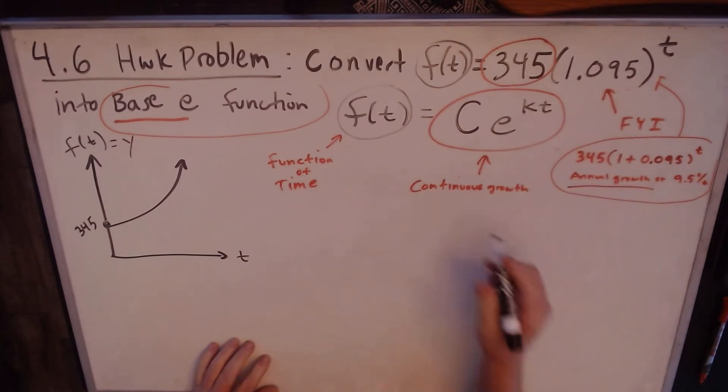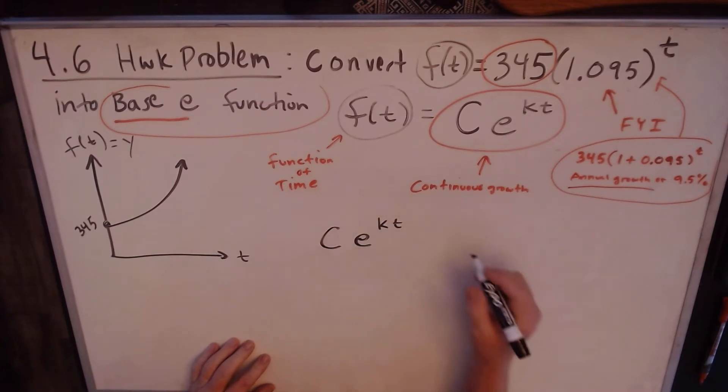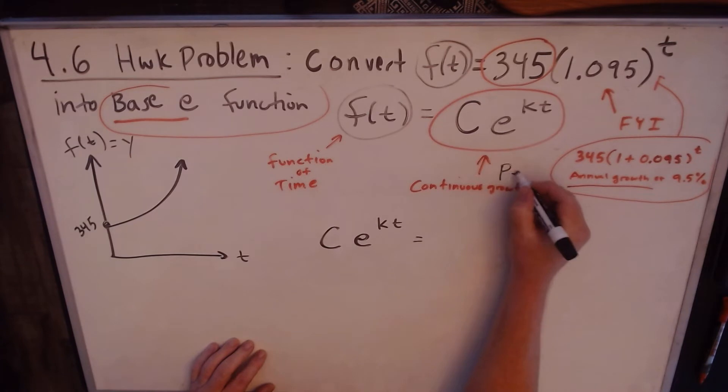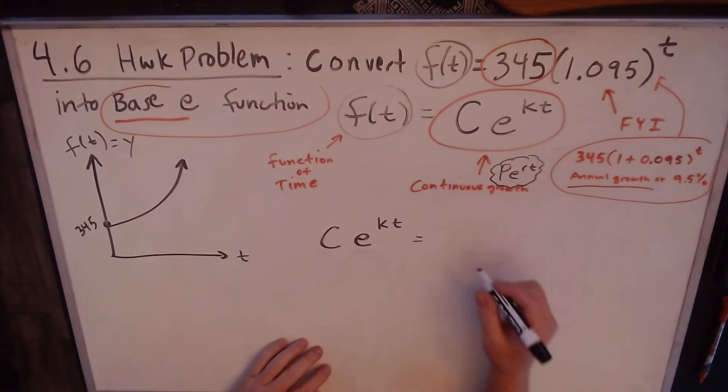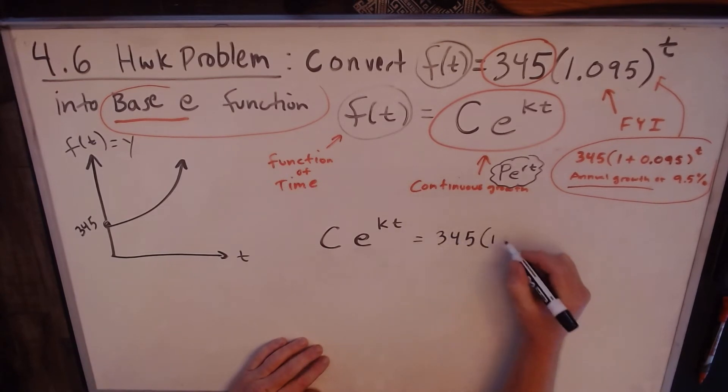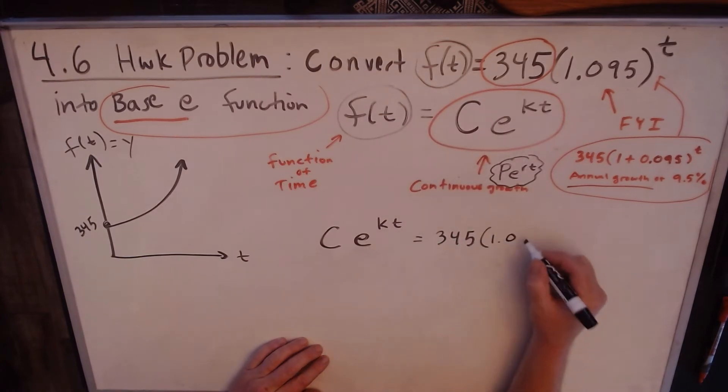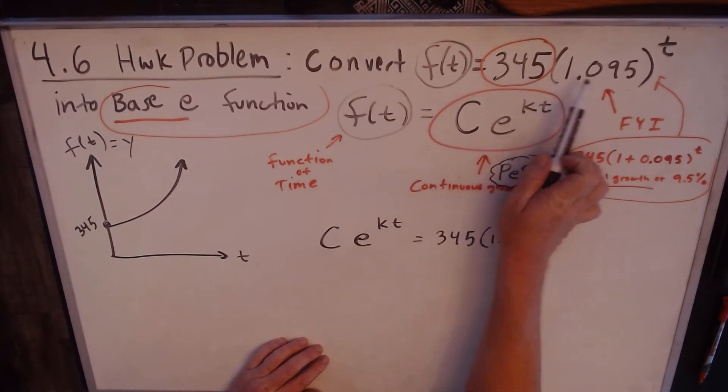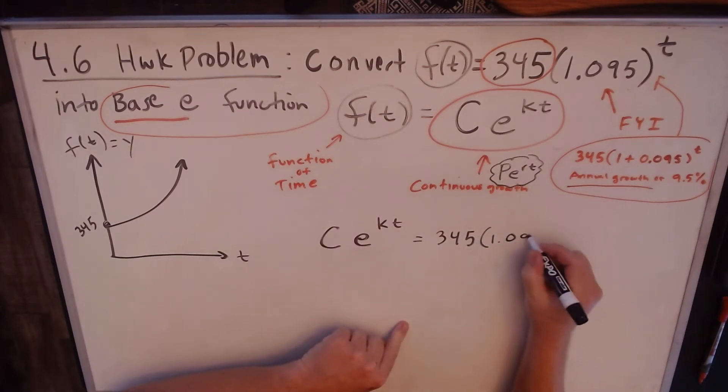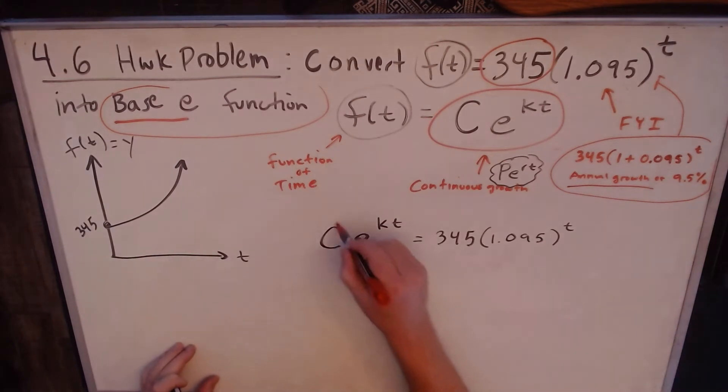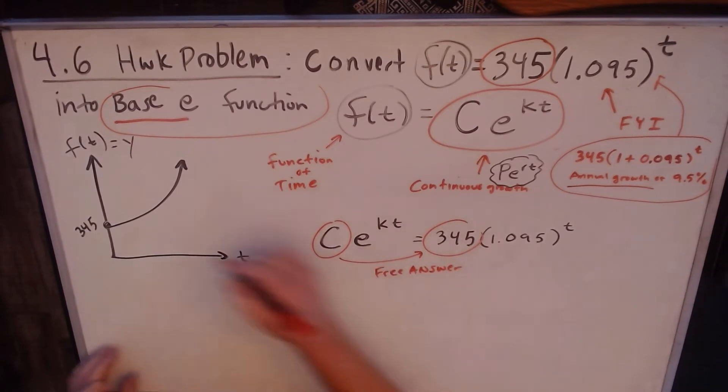So your 345 is your initial population or your initial investment, and it's growing exponentially. So what we're going to do is convert this base 1.095 into base e, so we have Ce^(kt). You might recognize this formula, it's the same as Pe^(rt), the same formula. Population, constant, principle, exponential, and then you have your k is the same as r. It's the same formula, just dressed up in a different outfit.